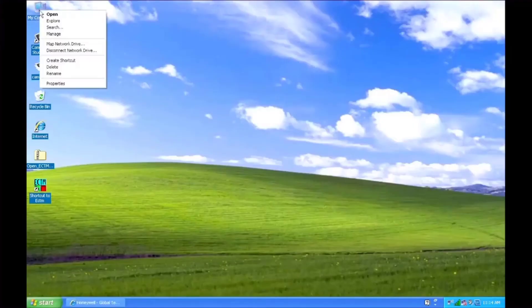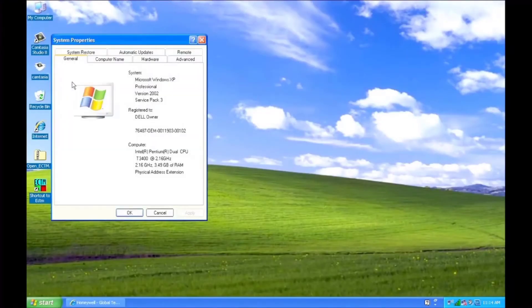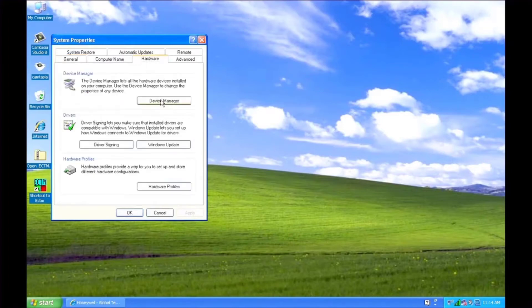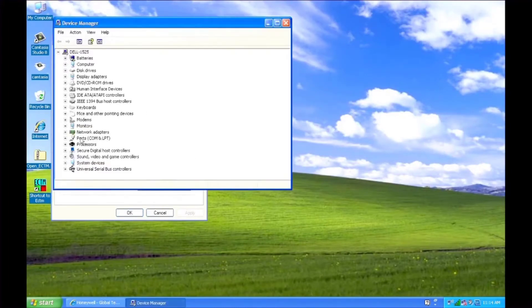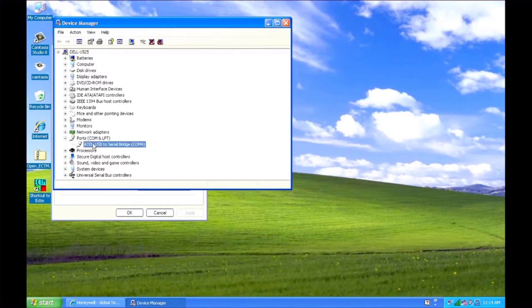Next, you'll need to configure the ECTM software to use the proper COM port. Connect the laptop to the DEEC and make sure the DEEC is powered on and in auto mode. Go to the device manager. Find USB to serial bridge and make a note of the COM port.